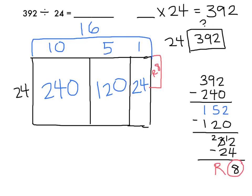So when I'm solving the problem 392 divided by 24, my final answer is going to be 16 remainder 8.